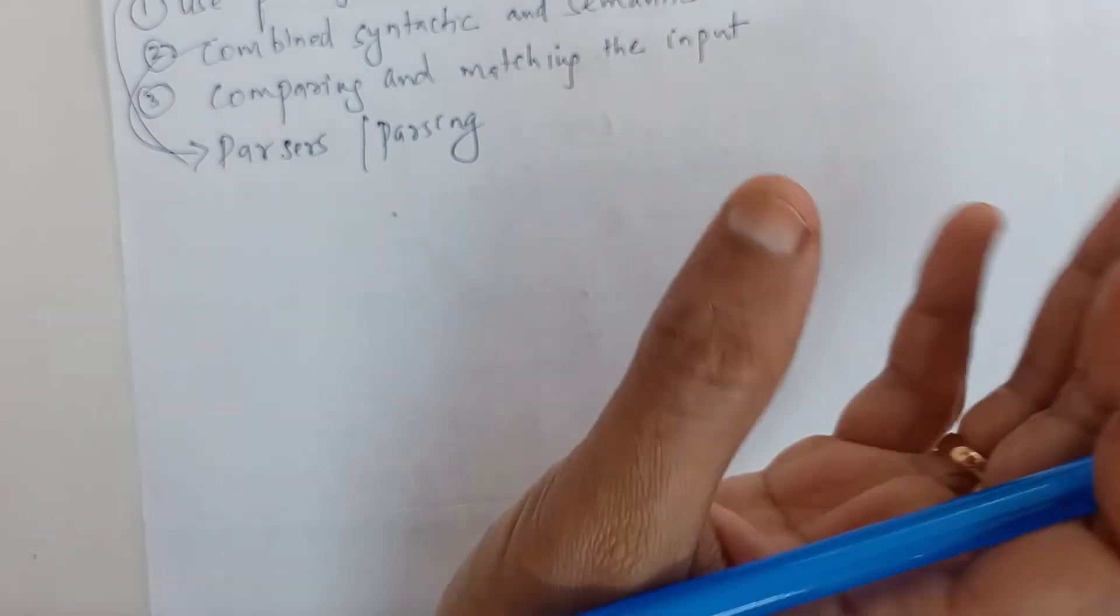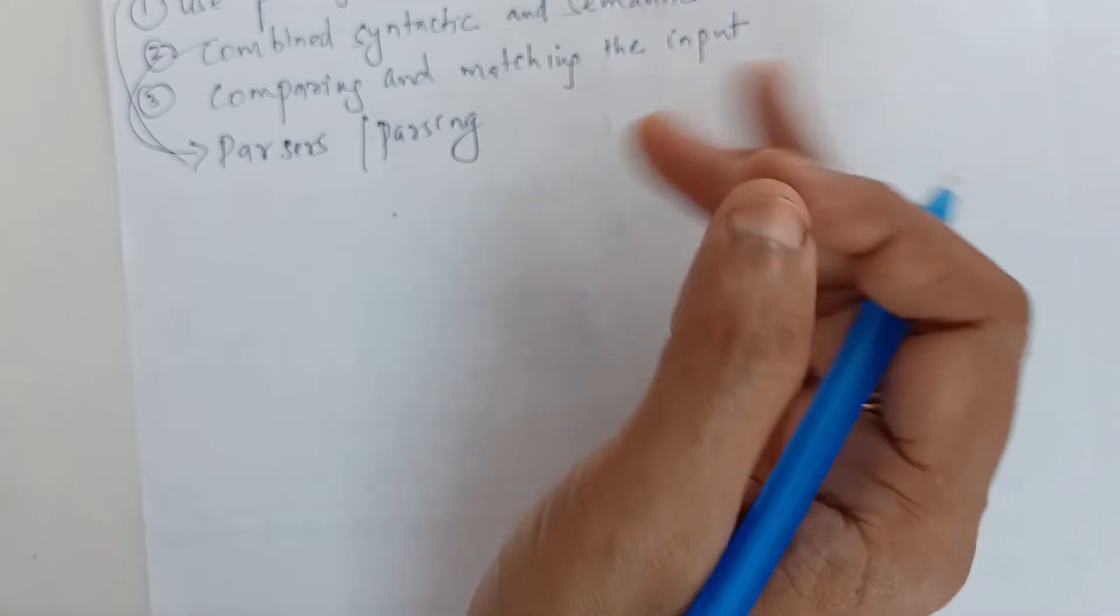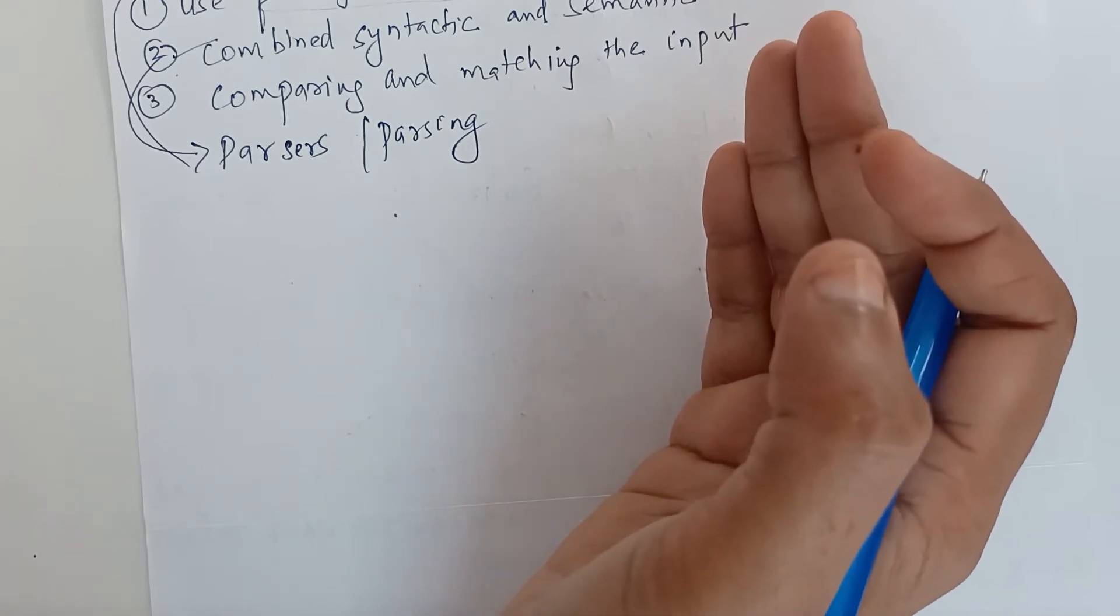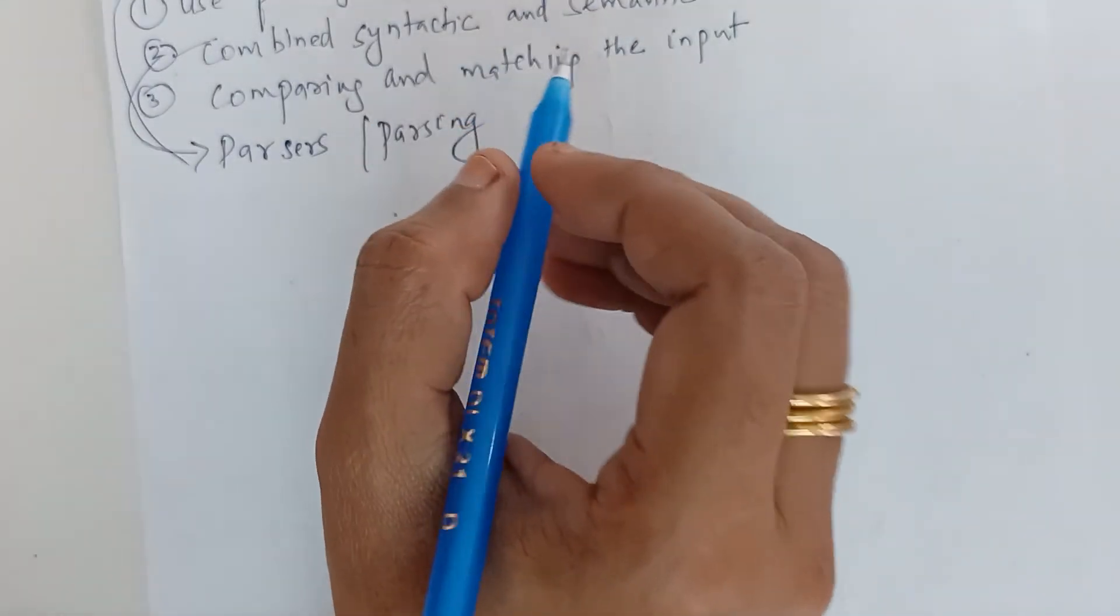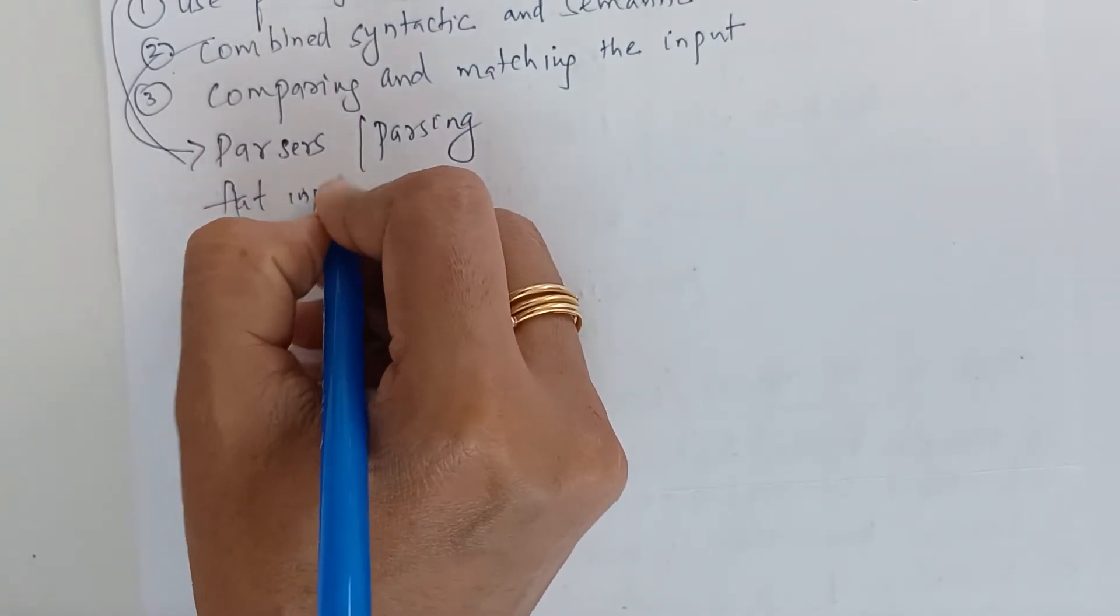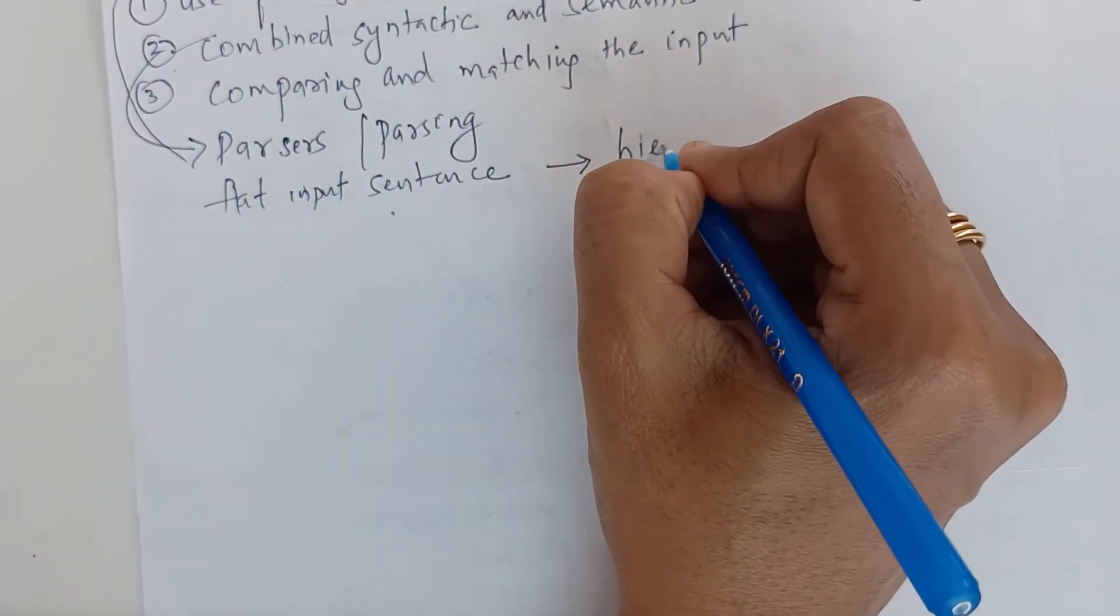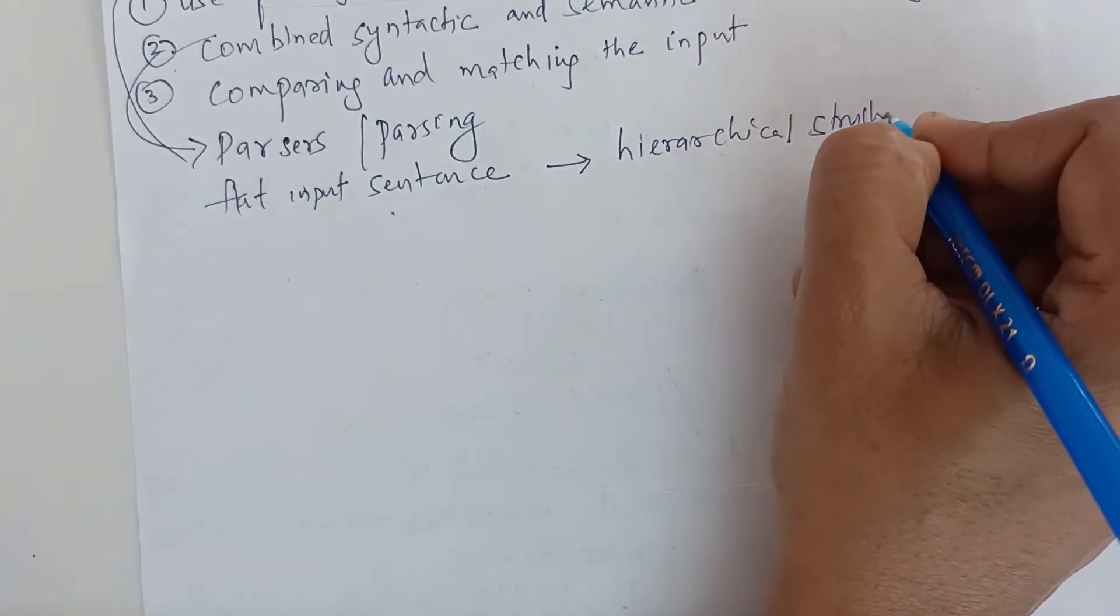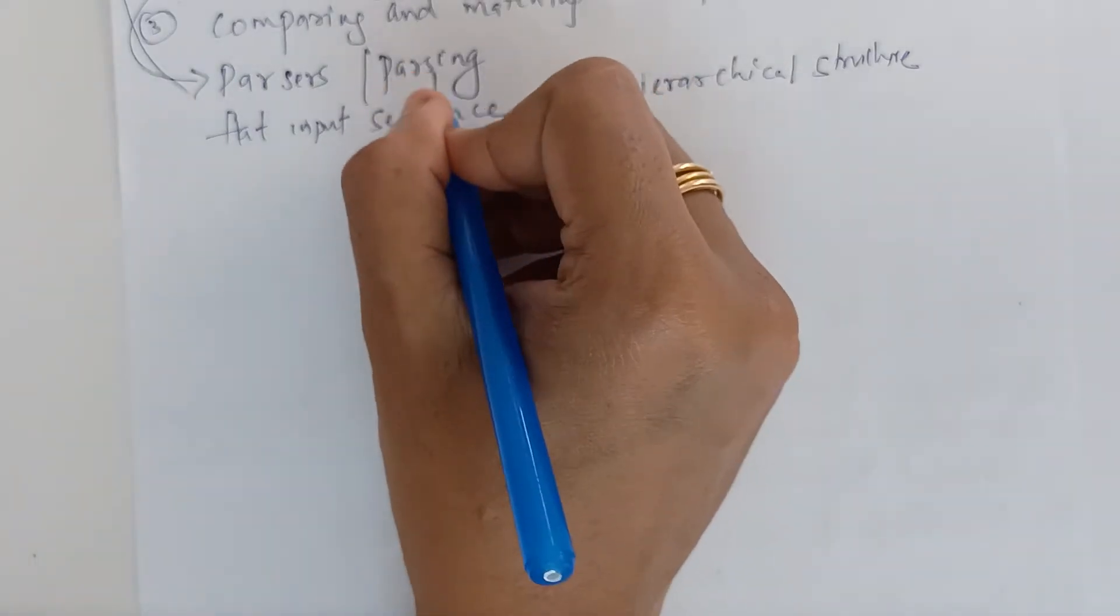Parsers are used to analyze individual sentences and to build structures that can be used directly or it can be transformed into required knowledge forms. Syntactic processing is the step in which the flat input sentence is converted to hierarchical structure which gives the units of meaning in the sentence. This is what we call parsing.